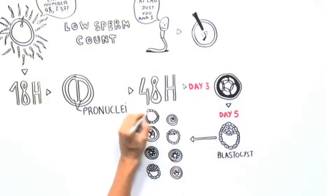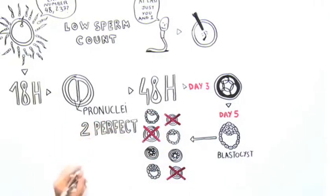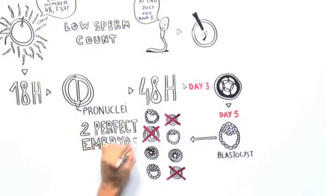Prior to transfer, abnormal embryos are discarded. The number of embryos to be transferred depends on the number available, the age of the woman, and the quality of the embryos.